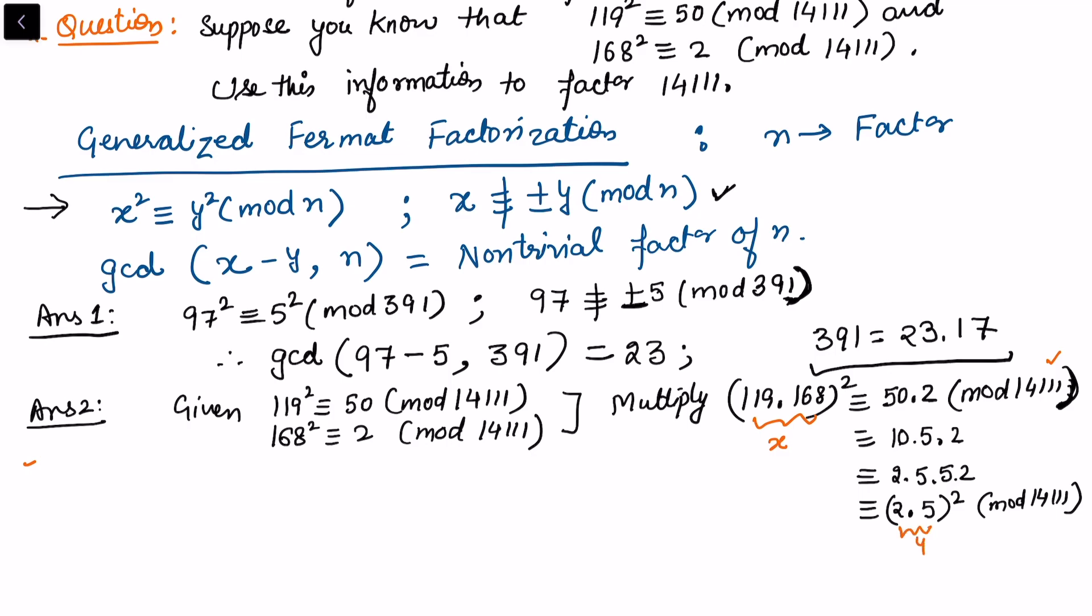Now we have x² ≡ y², so this fits my first condition. I'll check the second condition - it satisfies both conditions. So I can simply calculate gcd(x - y, n) = gcd(119 × 168 - 10, 14111).